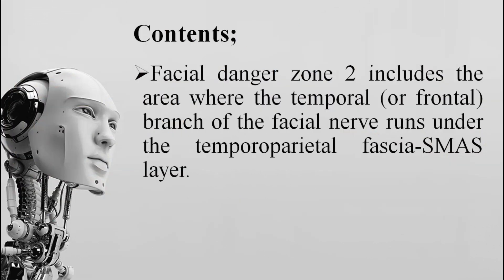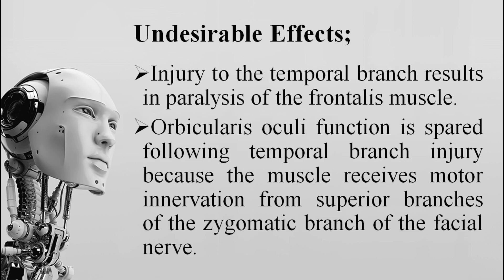Facial danger zone 2 includes the area where the temporal — sometimes called frontal — branch of the facial nerve runs under the temporoparietal fascia SMAS layer. Injury to the temporal branch results in paralysis of the frontalis muscle. However, orbicularis oculi function is preserved following temporal branch injury because the muscle receives dual innervation from the superior branches of the zygomatic branch of the facial nerve.